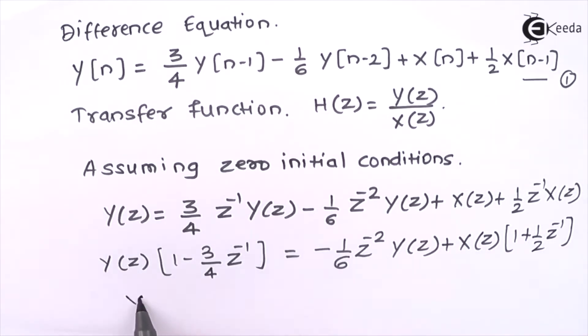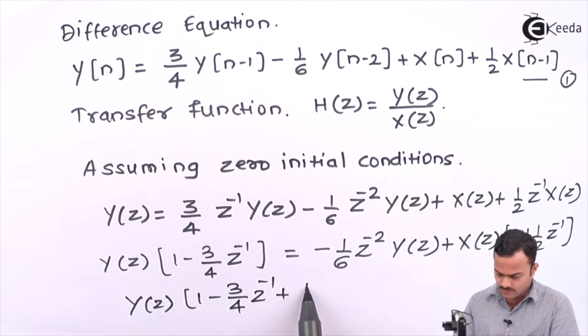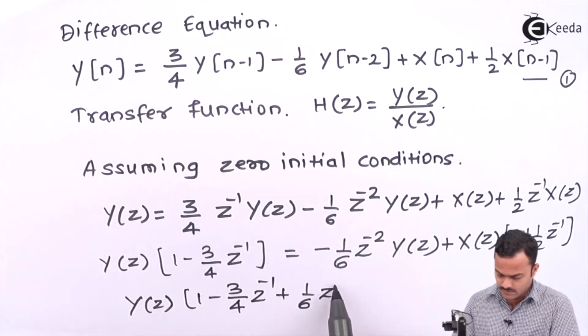So let's take this. In the end I will get Y(z) as Y(z)/X(z) as 1 - 3/4 z^(-1) + 1/6 z^(-2).